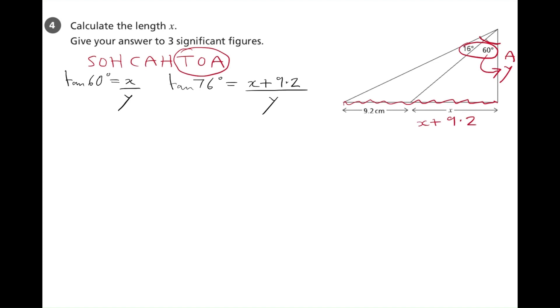So, we now have two equations, two unknowns. That's simultaneous equations. So, we must get one letter on its own in each equation, so we can multiply by y and divide by tan 60 in the first equation. So, we get y is x divided by the tangent of 60. In the other equation, we can multiply by y and divide by the tan 76. So, this now gives us y is x plus 9.2 divided by the tangent of 76.